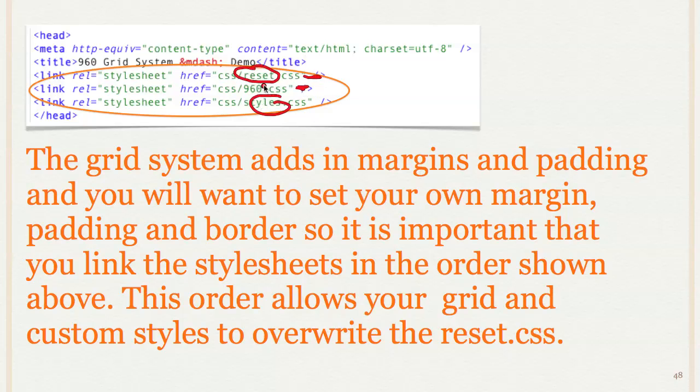So I want to zero things out with the reset, but then be able to overwrite it with the grid system, and then I want my own style to be able to overwrite the grid system if I need to. All right, so hopefully that makes the whole box model and grid system a little bit more understandable.